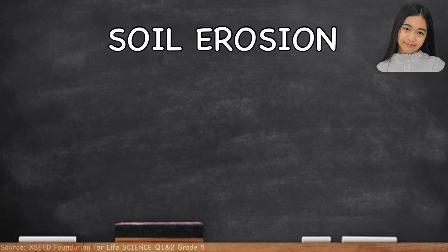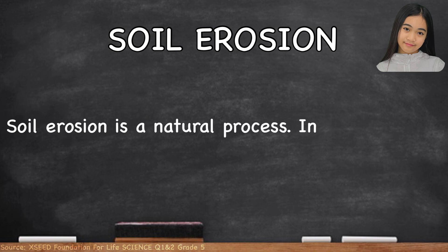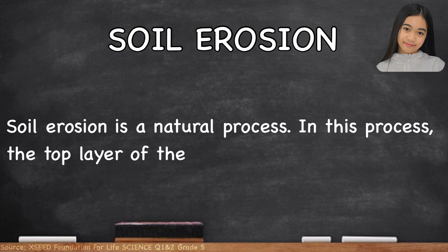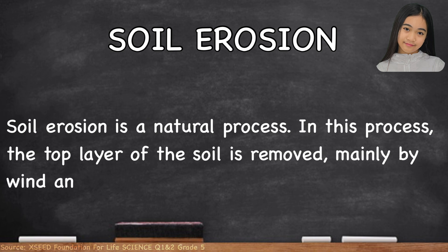Soil Erosion. Soil erosion is a natural process. In this process, the top layer of the soil is removed, mainly by wind and water.